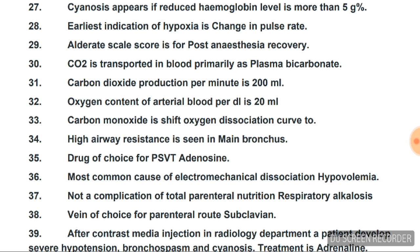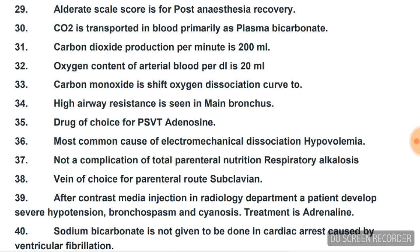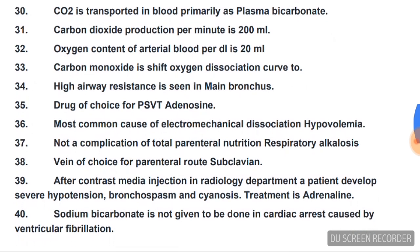Carbon monoxide shifts the oxygen dissociation curve to the left. High airway resistance is seen in the main bronchus. Drug of choice for PSVT is adenosine — same for SVT. Most common cause of electromechanical dissociation is hypovolemia.